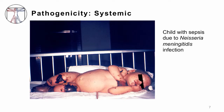Bacteria can also cause systemic infection — it can get outside one localized area and cause infection throughout the body. This is an unfortunate child who has sepsis, which is a disease of systemic over-response of the inflammatory system due to Neisseria meningitidis infection. Neisseria meningitidis is a common cause of meningitis. But it can also cause what we call meningococcemia, where the bacteria spread throughout the body. It has a very high mortality rate. You can see in this young child the disease has caused necrosis, or death of the skin, in the legs and the hands.